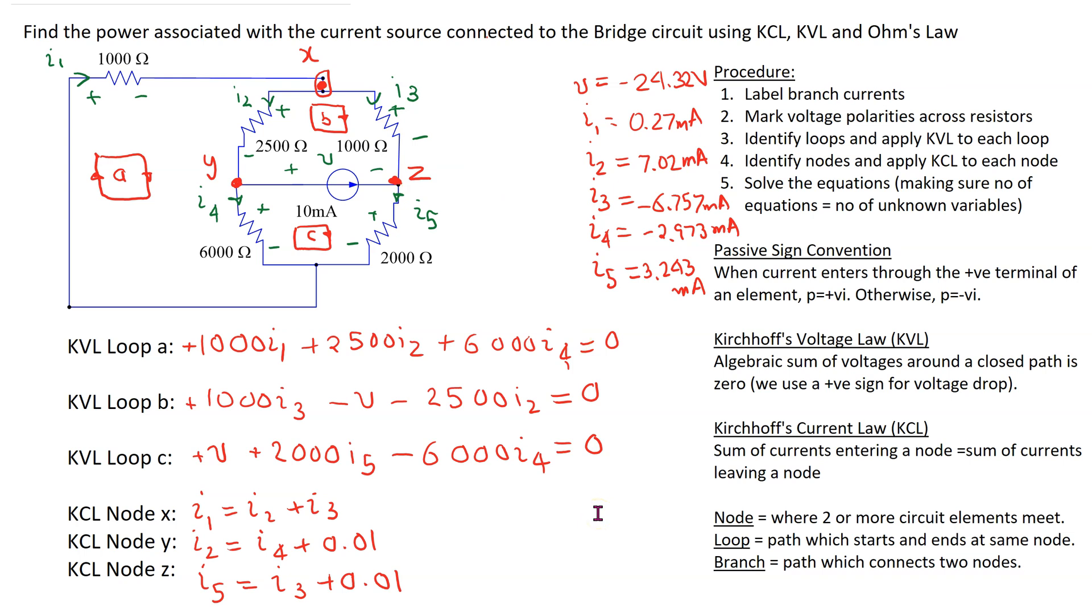To obtain the current values we can then find the power associated with the current source. In this case the power associated with the current source is the product of the voltage which is V and the current which is 10 milliamps or 0.01 amps and we need to use the passive sign convention to decide the sign of this power calculation. Since this current is entering the terminal marked plus we write the power calculation with a plus sign and then when we substitute the values the answer is minus 0.24324 watts which is minus 243.24 milliwatts. So the negative sign is showing that this current source is generating power in this circuit.